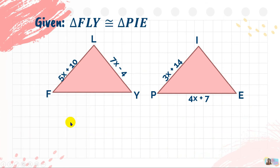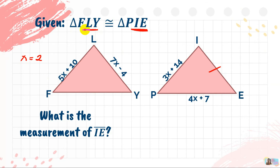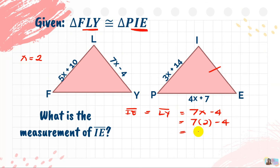Using the same two triangles — triangle FLY congruent to triangle PIE — the next question is: what is the measurement of side IE? The value of X is still 2. Side IE corresponds to side LY. So side IE equals side LY, which is 7X minus 4. Substituting: 7 times 2 minus 4 equals 14 minus 4 equals 10. Therefore, the measurement of side IE and side LY are both 10.